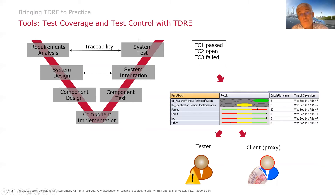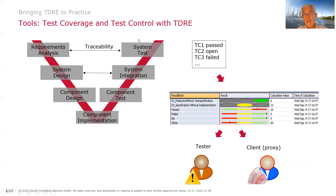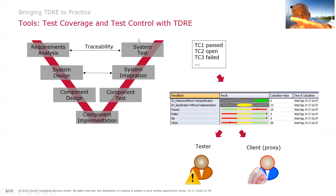The same can also happen if functionality correlates with another. For instance, if you have services, they often correlate with billing-related functionality. This means we finally end up with an N-to-M relationship — N requirements correlate and are aligned with M test cases. This N-to-M relationship is quite normal in testing, and it means we still have coverage, but it's not as trivial as simply saying each requirement has one single test case.